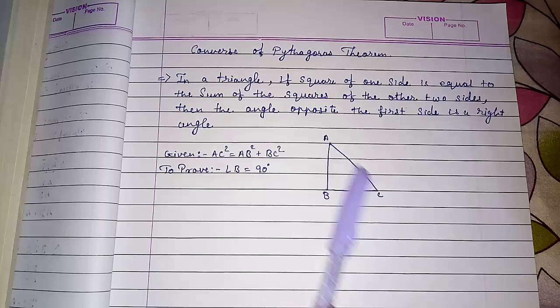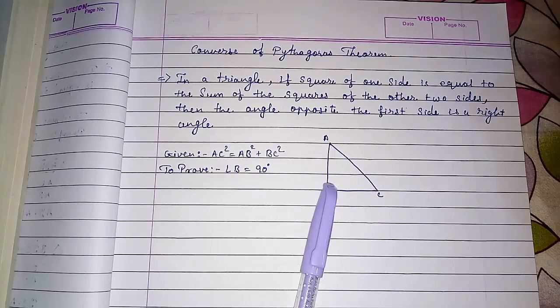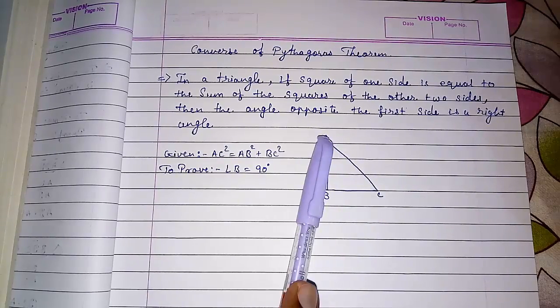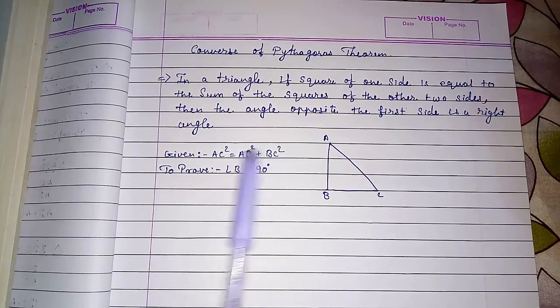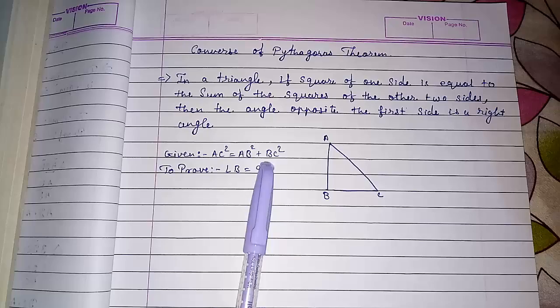Directly we know that this is the first side, and the square of the other two sides should equal this side is given, meaning AC² = AB² + BC² is given.